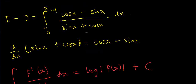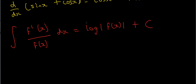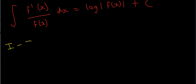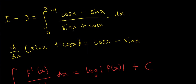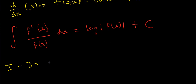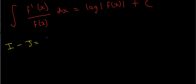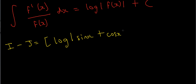This tells me how to evaluate this integral. Because the numerator is the derivative of the denominator, the integral is just the natural log of the absolute value of the denominator. So I minus J equals the natural log of the absolute value of sine x plus cosine x, evaluated from 0 to pi over 4.